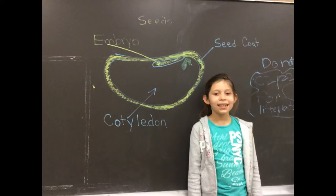Parts of a seed. The first part of a seed is the seed coat. The seed coat protects the inside of the seed.